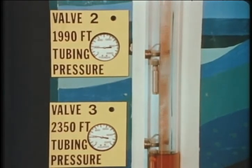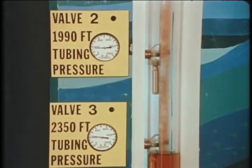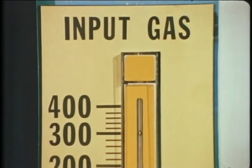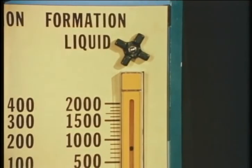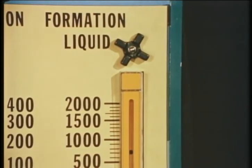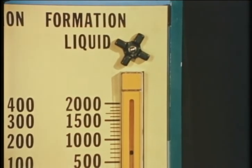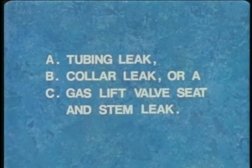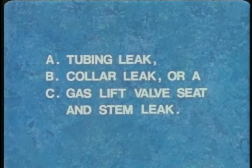Now that the well has stabilized, let's check the results. Gas input rate is still 300 MCF per day, but production has dropped from 800 to 700 barrels per day. A well being produced using the multi-point method will produce less liquid for the same amount of input gas. In actual field cases, this could have been caused by: A, a tubing leak; B, a collar leak; or C, a gas lift valve seat and stem leak.